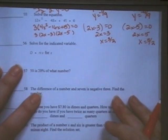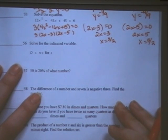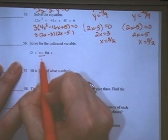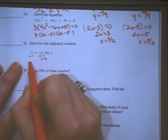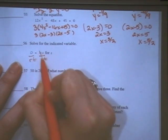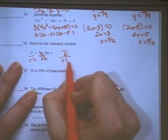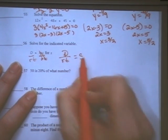For number 56, you are asked to solve for the indicated variable, and it has D is equal to RTS. I'm solving for S, which means they are multiplying, therefore I'm going to divide by R and T. My Rs would cancel, my Ts would cancel, my S is all by itself, so D over RT is equal to S.